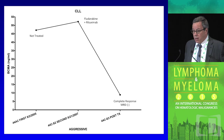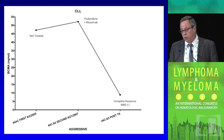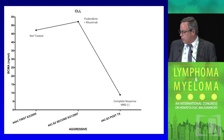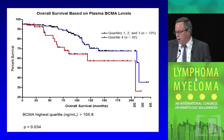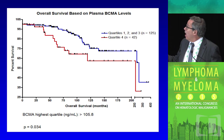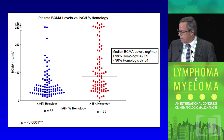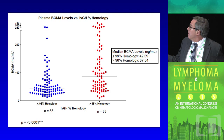Patients who achieve complete response show BCMA dropping to normal — consistent with the myeloma story that those who start with lower BCMA levels are more likely to achieve complete responses. Overall survival is significantly different, with those in the highest quartile showing shorter survival than the other three quarters.